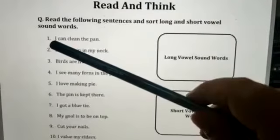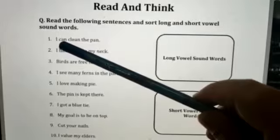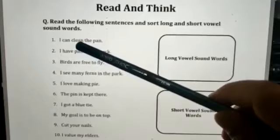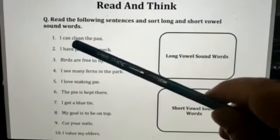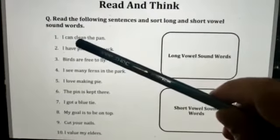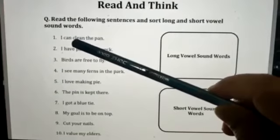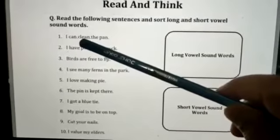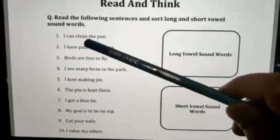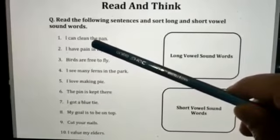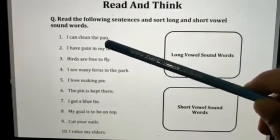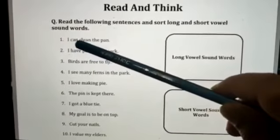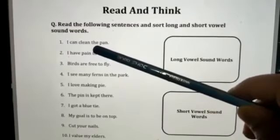Let's read the first one. I can clean the pan. Now this is, remember, two vowels are walking, first one does the talking and second one shh. So this is C-L-E-A-N, clean, with the name sound. And P-A-N, pan.